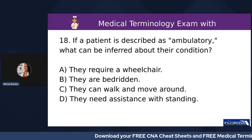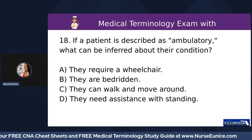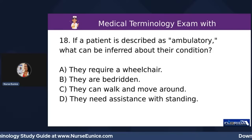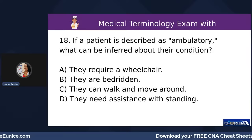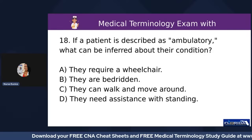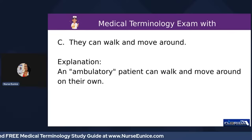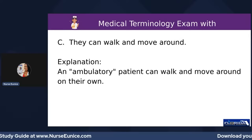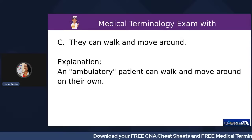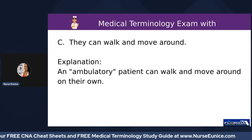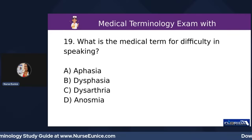Number eighteen: if a patient is described as ambulatory, what can be inferred? A) they require a wheelchair, B) they are bedridden, C) they can walk and move around, or D) they need assistance with standing. Ambulatory means C — they can walk. When they're walking, make sure they have proper medical socks with grips on the bottom, or regular shoes, so they don't fall.